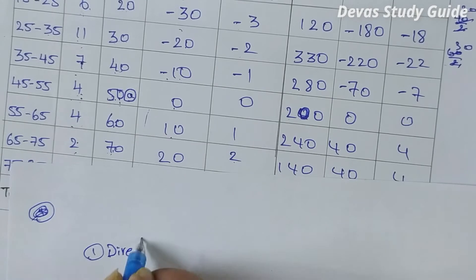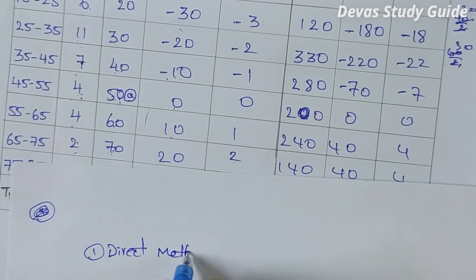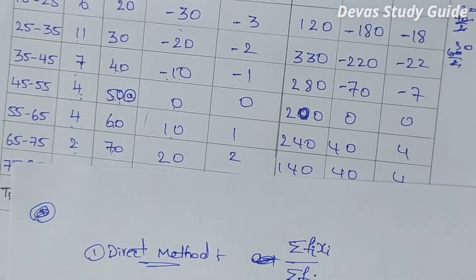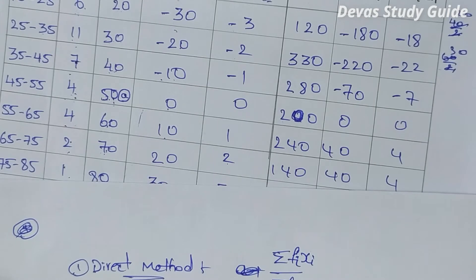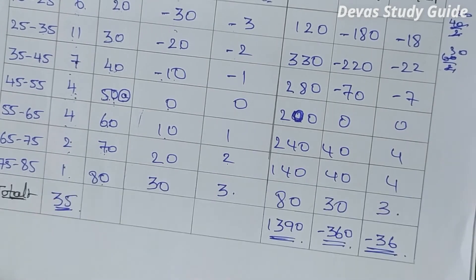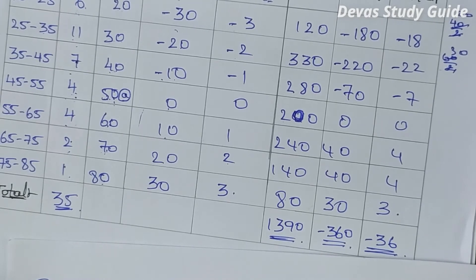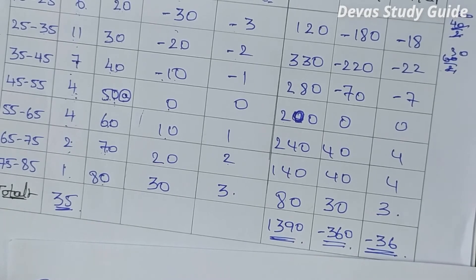Direct method formula: mean equals sigma(fi·xi) by sigma(fi). So fi·xi equals 1390 divided by 35. UI equals minus 36 divided by 35.